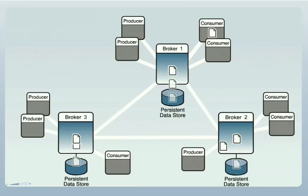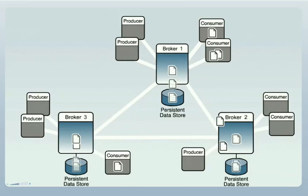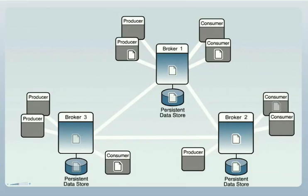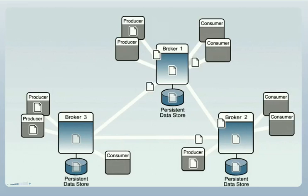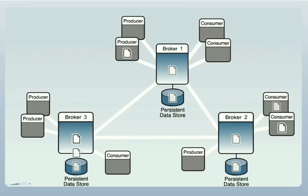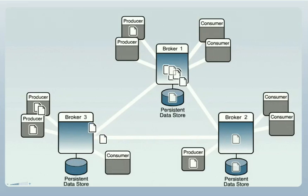In a broker cluster, the brokers collectively deliver messages to their intended consumers. Messages produced to one broker can be delivered to consumers connected to any of the brokers in the cluster. Each broker is responsible for the delivery of messages produced by the producers connected to it. Brokers communicate and share information about consumers and message delivery state so as to maximize the efficiency of delivery across the cluster.